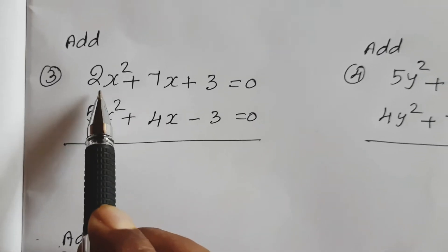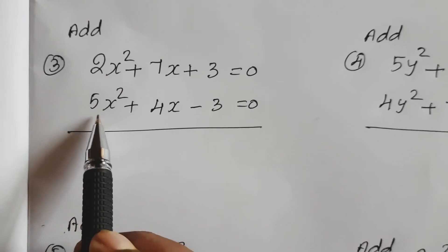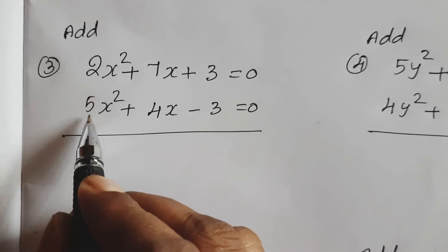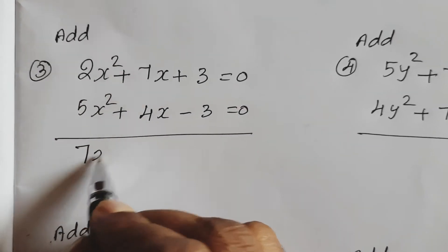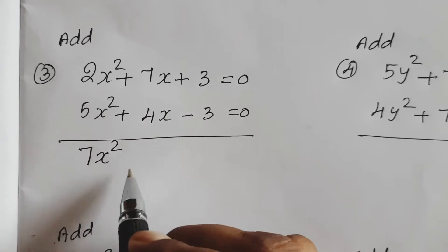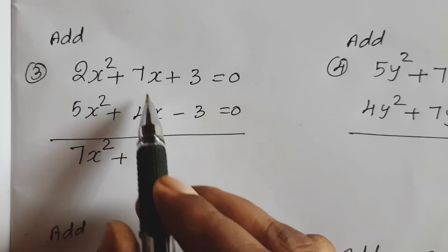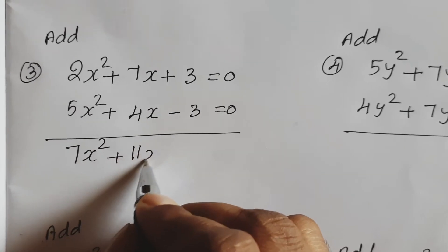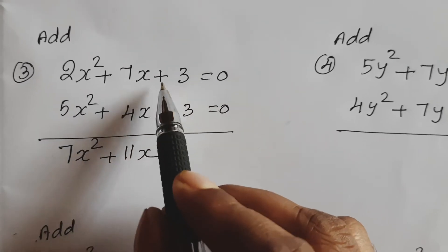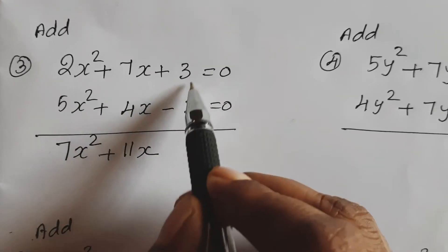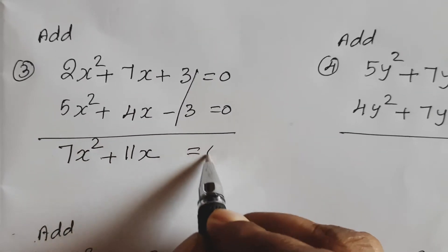Now, 2x² plus 5x², so 2 plus 5, 7x². Plus 7x plus 4x, so 11x. Here plus 3, negative 3, so both are cancelled. Equal to 0.